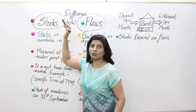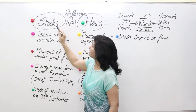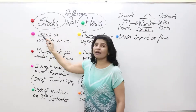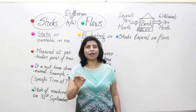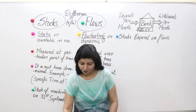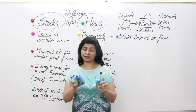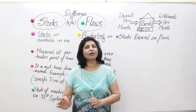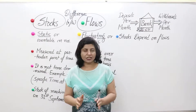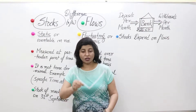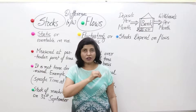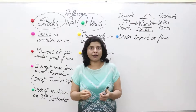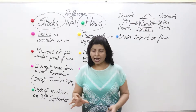Now from these two terms — stocks and flows — we can see: S-T-O-C-K-S, stocks, and here 'static.' Stock is a static concept, that is, it is measured at a particular point of time. Right now I am having these three packets, but this is a static point — I am not considering the whole day. So this is static, measured at this particular point or moment of time. It's a countable concept — I can count the number of packets of biscuit with me.